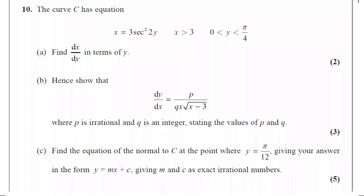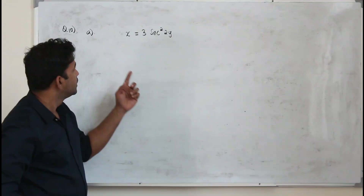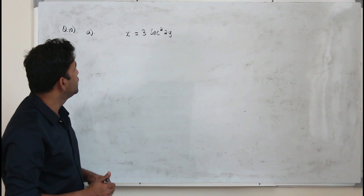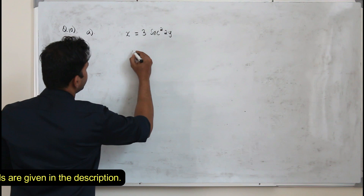Question number 10. The curve C has equation x equals 3 sec squared 2y. Part A: find dx upon dy in terms of y. This question is worth two marks. Here they want you to find the first derivative of x with respect to y, dx over dy.